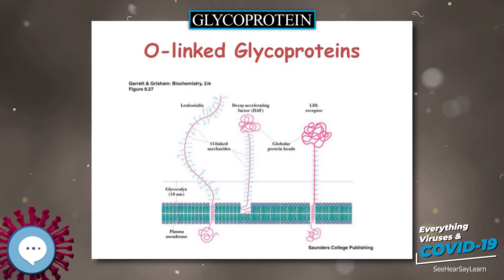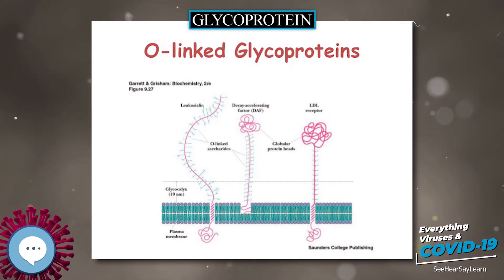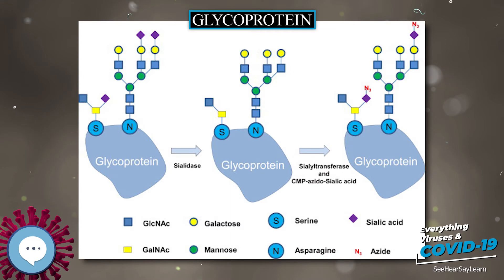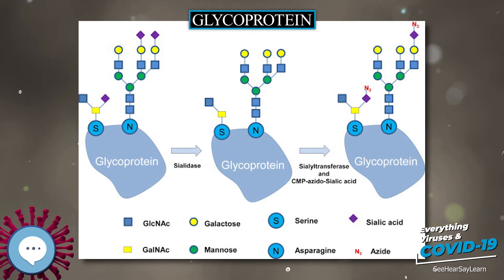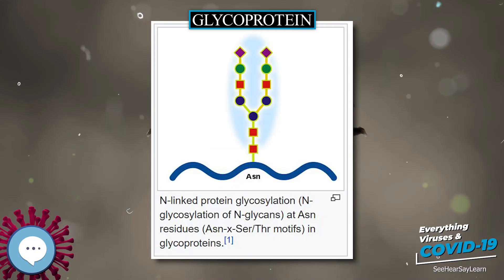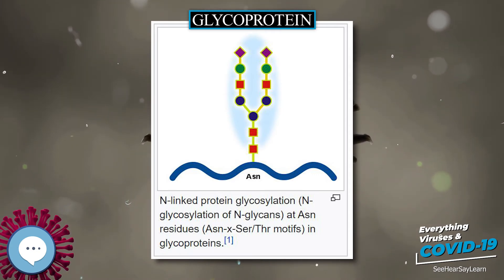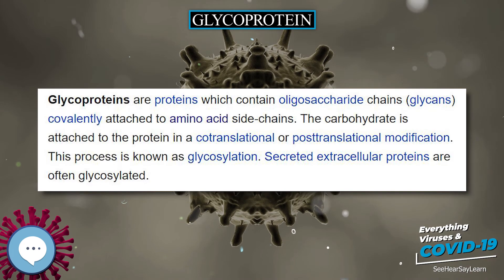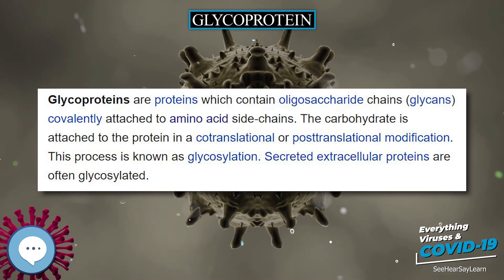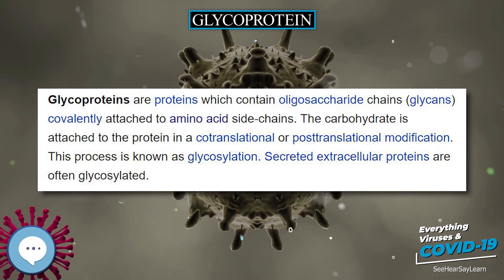A famous example of this latter effect is the ABO blood group system. There are several types of glycosylation, although the first two are the most common. Monosaccharides commonly found in eukaryotic glycoproteins include a range of sugar residues.